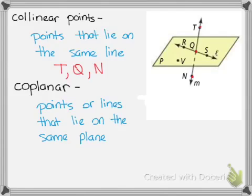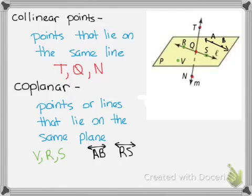Okay. An example of coplanar points would be three points on the same plane. So, for example, we could say V, R, and S. V, R, and S are all on the same plane. And I don't have any coplanar lines here. If I were to draw another line, say going right here, we'll just label that line AB. Then we could say that line AB and line RS are coplanar lines. Okay.